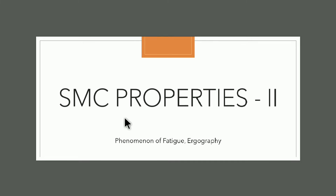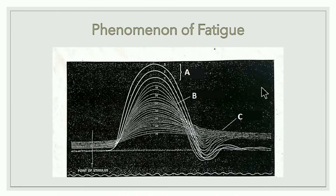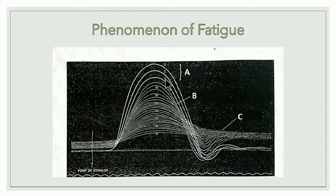Section three: simple muscle curve properties Part 2 — phenomenon of fatigue and ergography. Fatigue occurs when continuous exercise causes the muscle to become tired. Here we continuously stimulate the muscle and it gradually undergoes fatigue. Initially when stimulation begins, there is an increase in the height of the curve — this is region A, the beneficial effect. Then gradually the height starts decreasing as fatigue sets in.